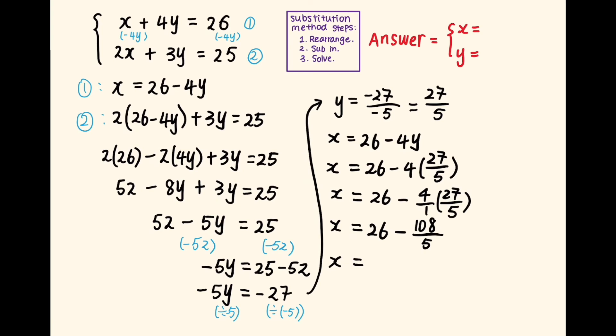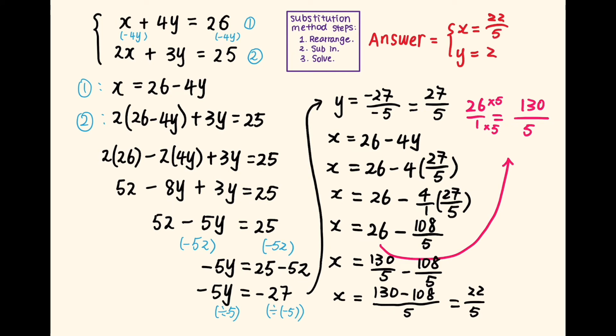To solve for x, I know 26 can be written as 26 over 1. And if I multiply both the numerators and denominators by 5, I turn 26 over 1 into 130 over 5. Now the two fractions have the same denominators. That means I can subtract them. So 130 over 5 take away 108 over 5 is equal to 130 minus 108 over 5, which is 22 over 5. So now I found my x value is equal to 22 over 5 and y value is equal to 27 over 5.